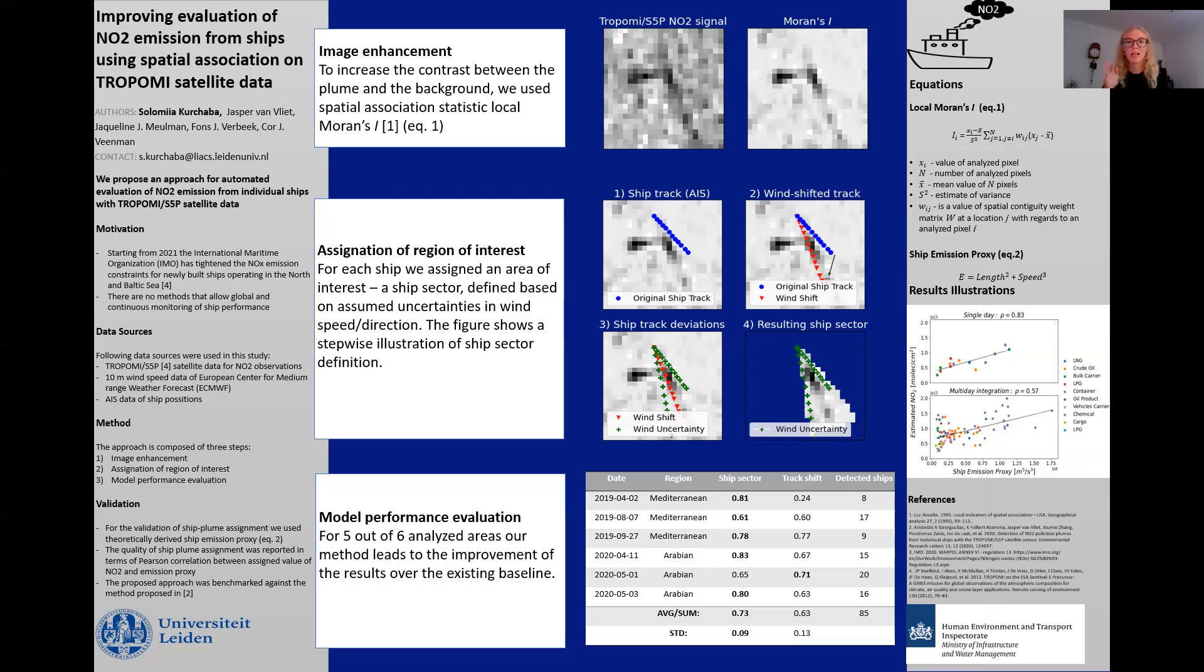Second, we address the problem of association of the detected plume with the corresponding ship. For this, for each ship we assign an area of interest, a ship sector. The ship sector is defined based on the ship track taken from AIS data, as well as introduced uncertainties in wind speed and wind direction. We assume that the plume produced by a ship will be located within the defined sector.